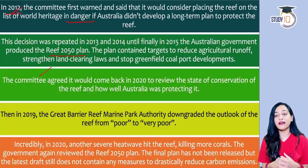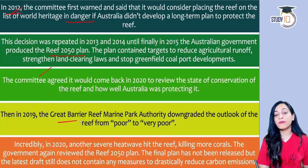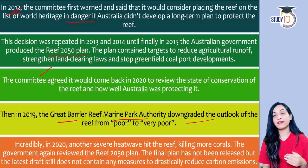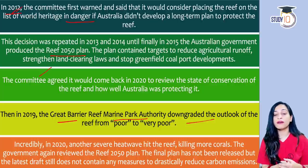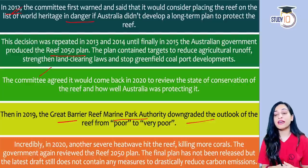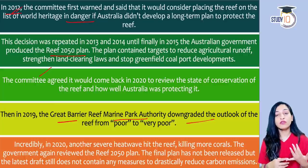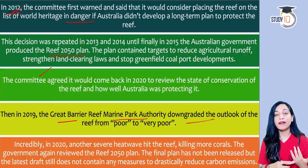In 2019, the Great Barrier Reef Marine Park Authority downgraded the reef's outlook to 'poor to very poor' status. Then in 2020, a major heat wave caused widespread coral bleaching and coral death. The government reviewed the 2050 plan but did not release an updated version.